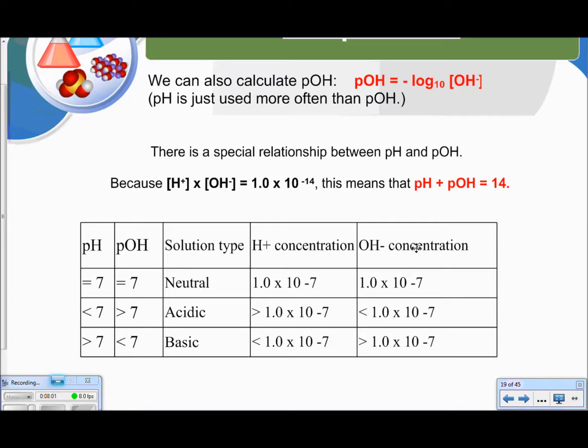So here is a little chart explaining things. If you have a neutral solution, your pH and your pOH will be 7. So when you add them together, it will get 14. Your hydrogen ion concentration and hydroxide ion concentration will be the same, 1.0 times 10 to the negative 7. If it's acidic, your pH is less than 7. Your pOH is greater than 7. If you're basic, it's the opposite. Your pH is greater than 7, but your pOH is less than 7. So the pOH scale is exactly the opposite of the pH scale.